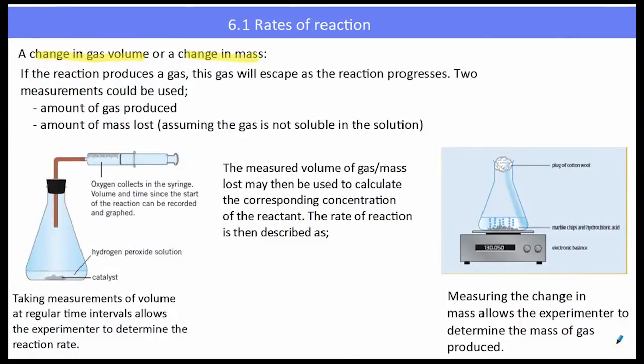As those videos demonstrated, the reaction could produce a gas that will escape as the reaction progresses. The two ways we could measure it are to measure the amount of gas produced using a gas syringe, or we could look at the amount of mass lost. An important assumption here is that we assume the gas is not soluble in the solution. If we are collecting the gas, we can take measurements of volume at regular time intervals, which allows us to determine the reaction rate.